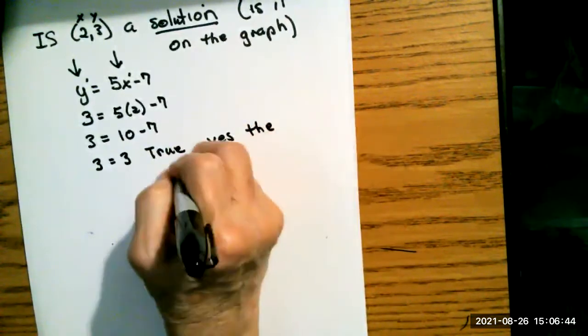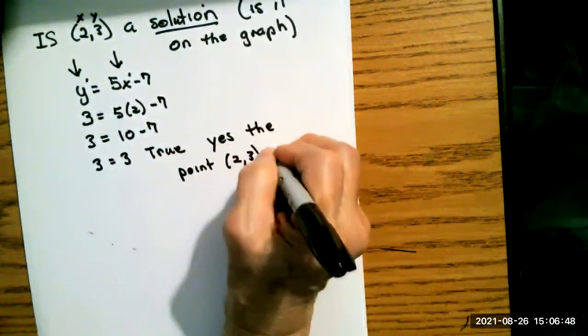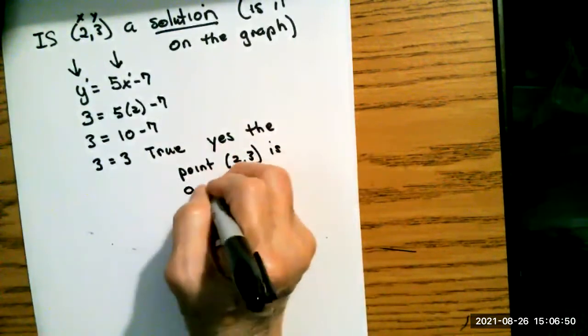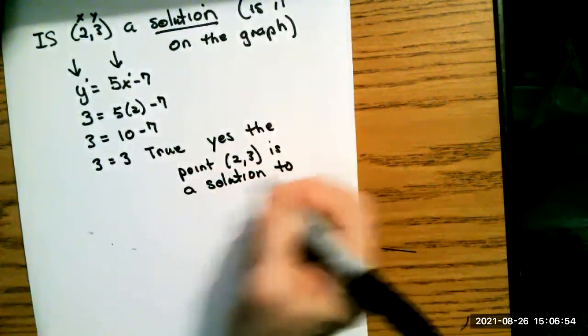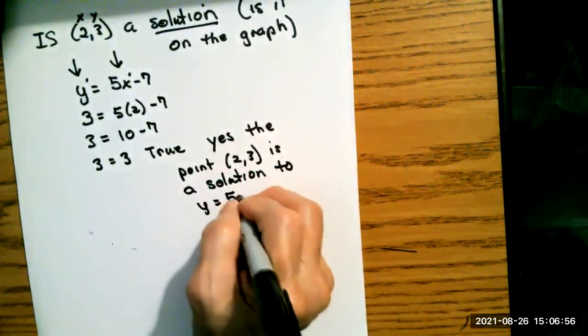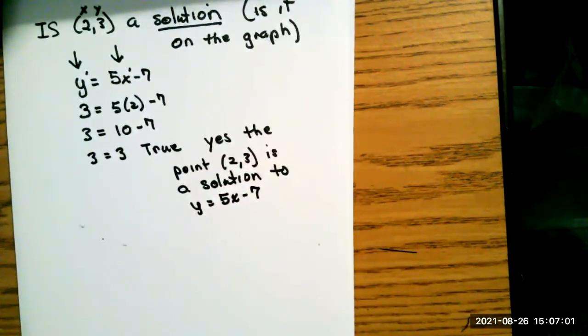So my answer is yes, the point 2, 3 is a solution to y equals 5x minus 7. So that would be the way I would do that kind of problem.